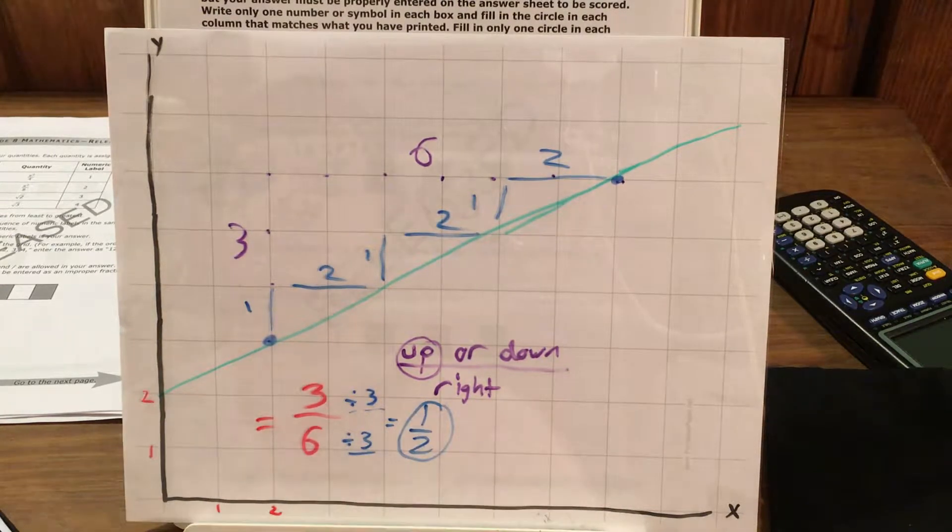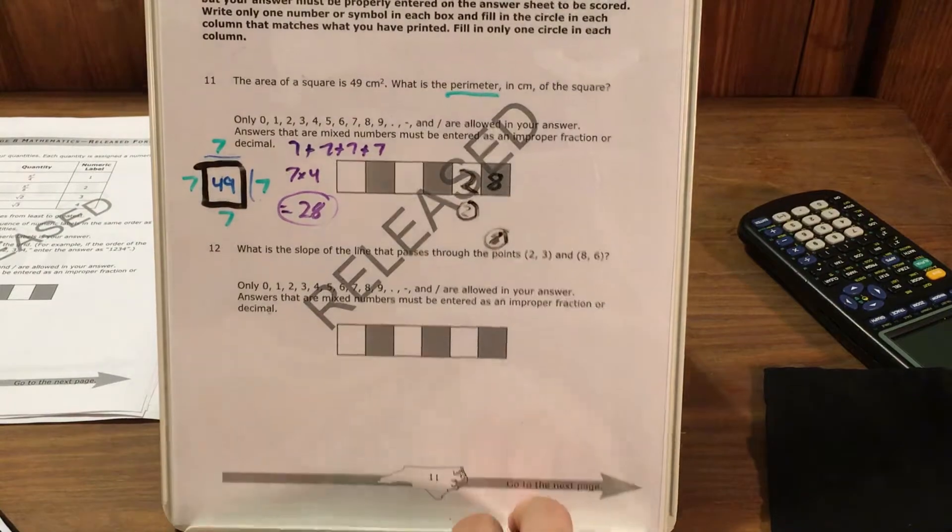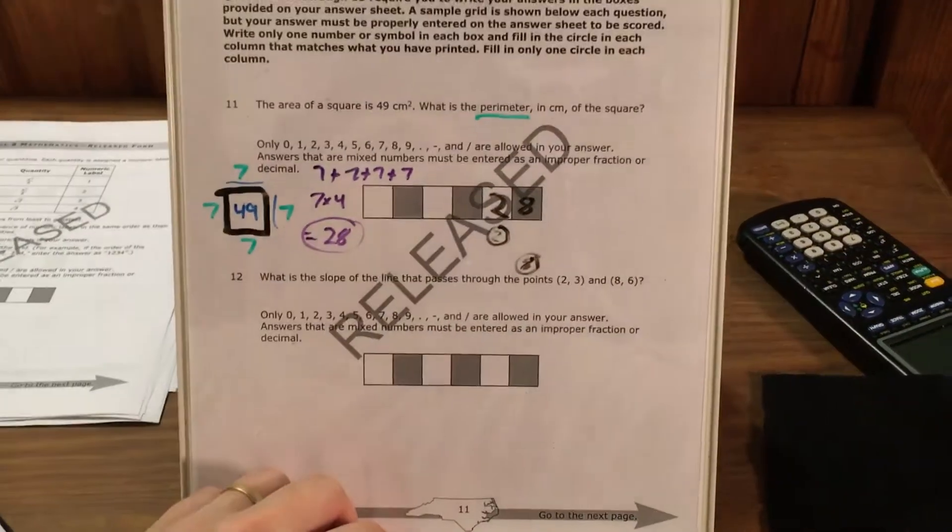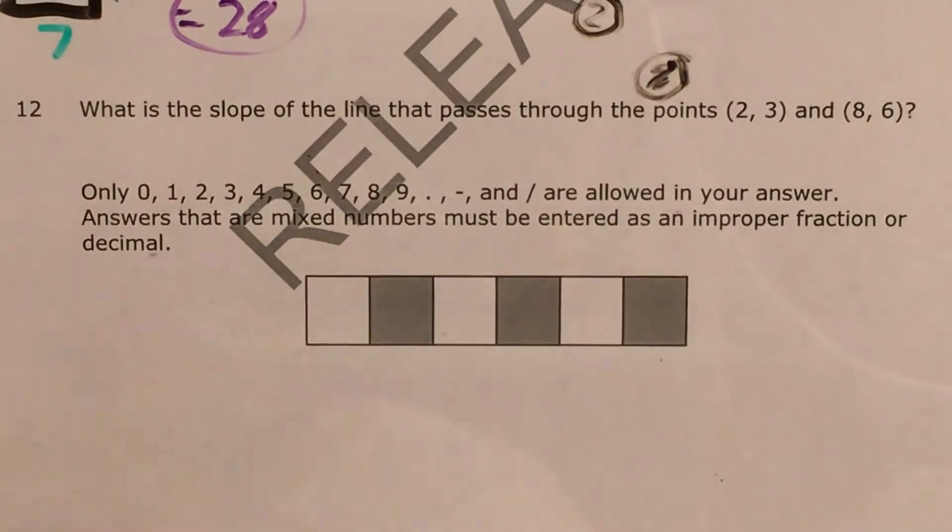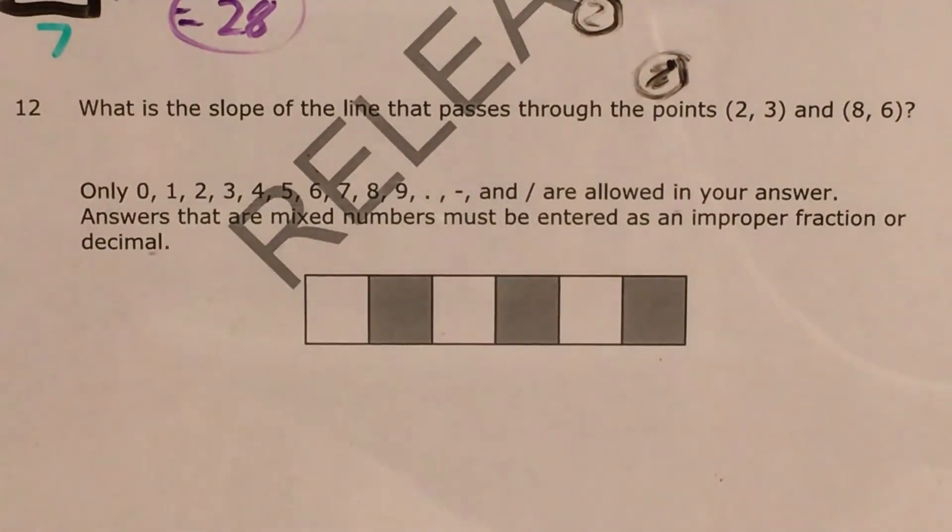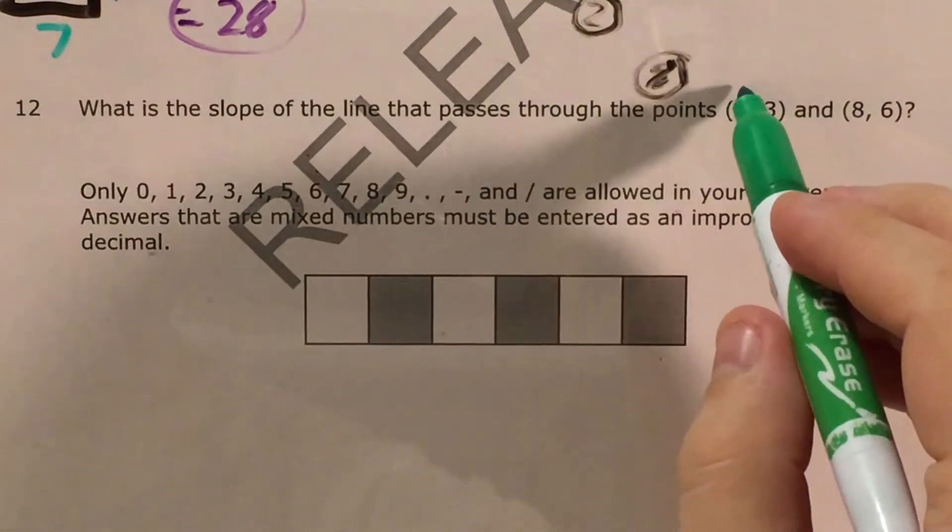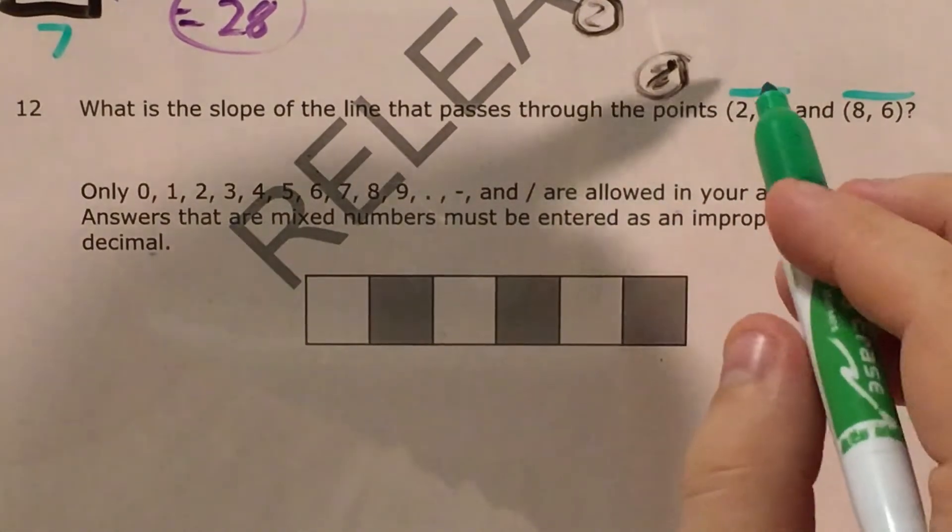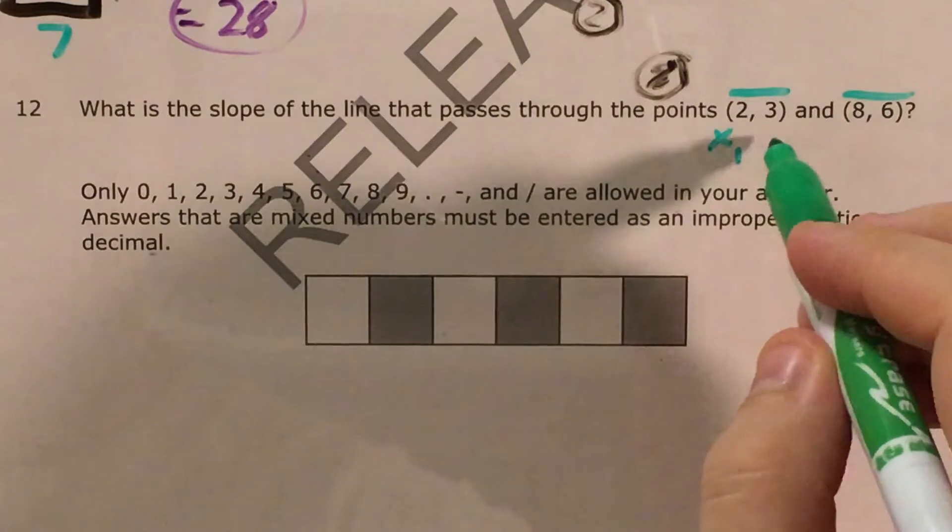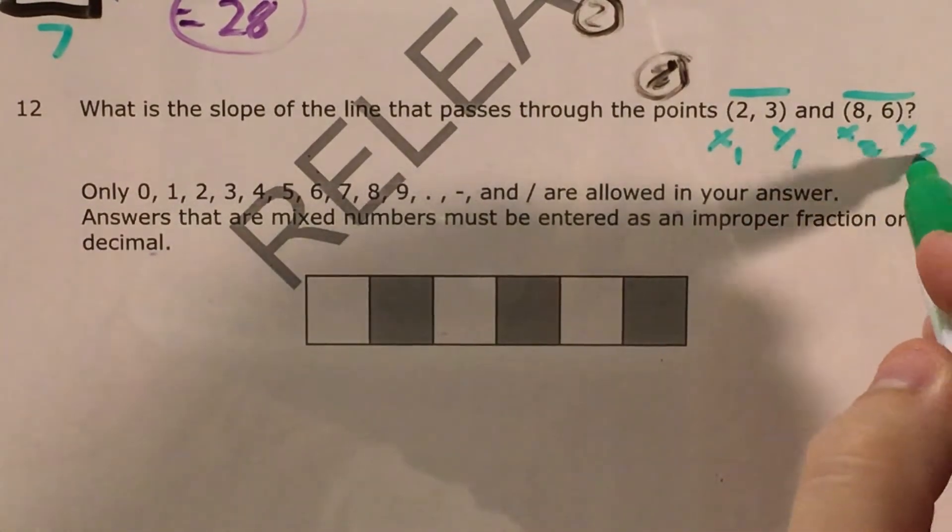So we're looking for a slope of 1 half or 3 sixths. We got there from the graph, but I do want to go over the actual slope formula. Let's zoom that back in. Now the actual slope formula is going to require me to name each of these four numbers. Now I'm going to start by just calling this point 1 and this point 2. Every point has an x and a y, so from point 1 I'll have x1 and y1. In point 2 I'll have x2 and y2.